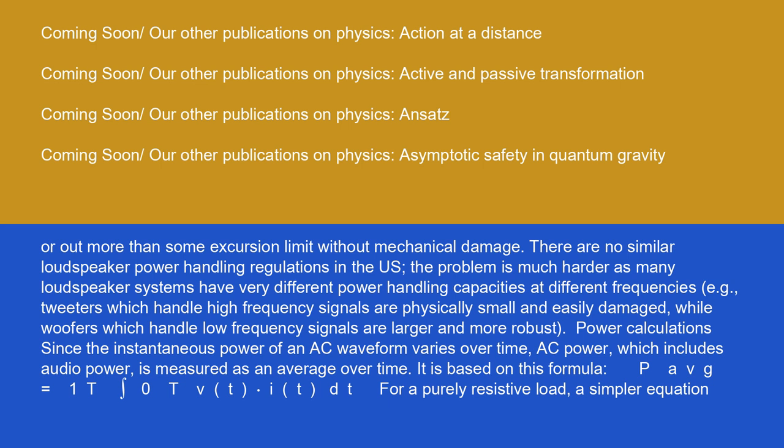Power calculation: Since the instantaneous power of an AC waveform varies over time, AC power, which includes audio power, is measured as an average over time. It is based on this formula: P_AVG equals 1/T integral 0 to T V(T)I(T)dT for a purely resistive load.